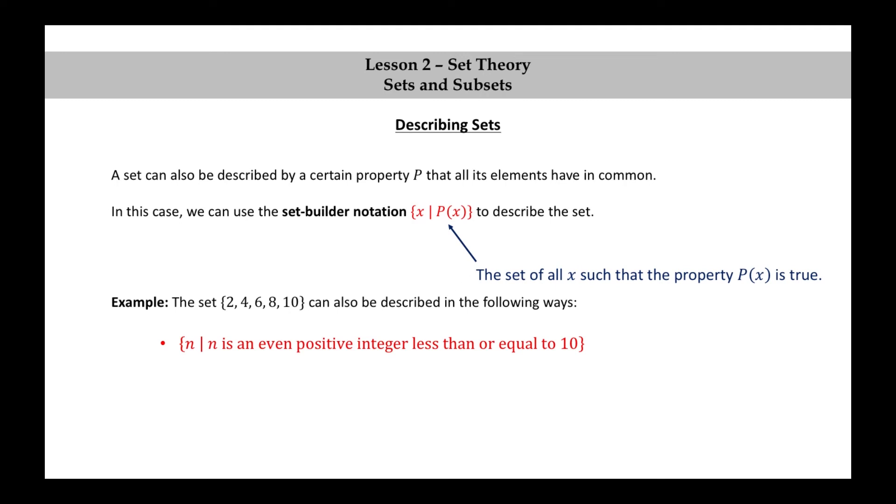The set of N such that N is an even positive integer less than or equal to 10. How about this way? This first expression can be read N is in the set of integers, or more simply, N is an integer. So we can read this whole set as the set of integers N such that N is even and N is between 0 and 10, including 10, but excluding 0.